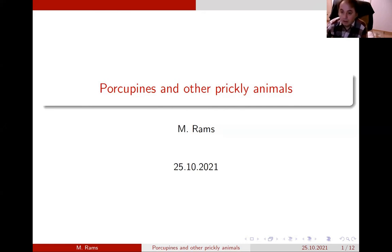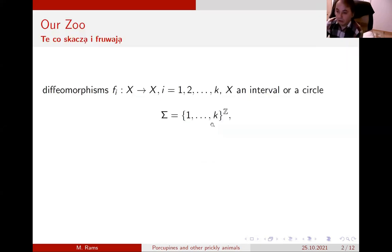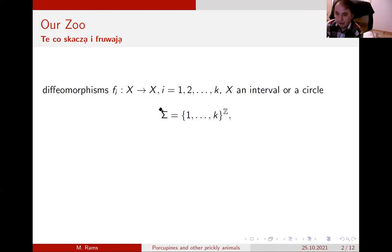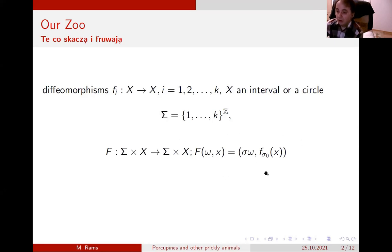So what is the type of dynamical system this will be about? It will be a class of skew products of one-dimensional maps. That is, we have some one-dimensional manifold — meaning some interval or a circle — and we have finitely many maps on this manifold, and then we allow ourselves to apply those maps in any order we want.